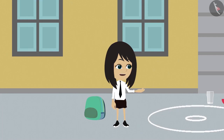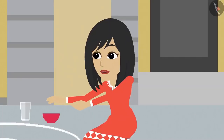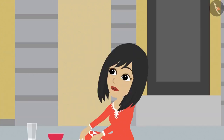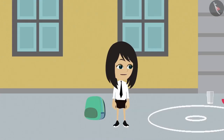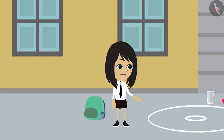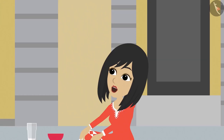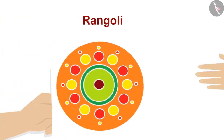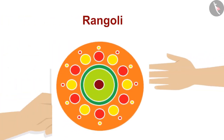Mummy, what are you making? I am making a rangoli. Good, you have come. Come and help me make the rangoli. Till then, I will get your food ready. How can I help? I do not know how to make a rangoli. I will make the rangoli. You just copy the design from this paper onto the ground with this chalk.